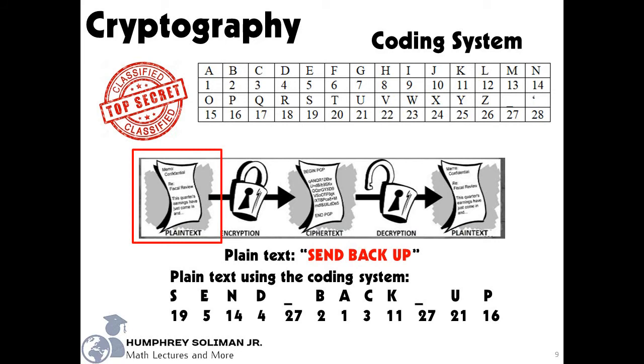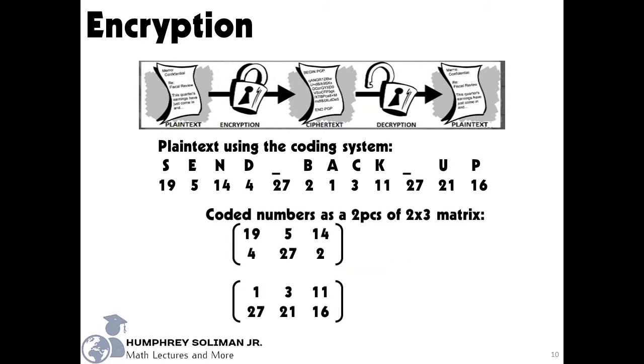Next is to write this coded message as 2 by 3 matrices. The first 3 characters will form the 1st row, the next 3 will form the 2nd row, the next 3 will form the 3rd row, the next 3 will form the 4th row. And then we will multiply this matrices to a key matrix in the form of 2 by 2 matrix. A 2 by 2 matrix multiplied to a 2 by 3 matrix is conformable. It will give a 2 by 3 matrix as a result.